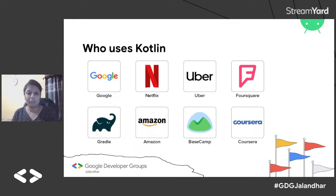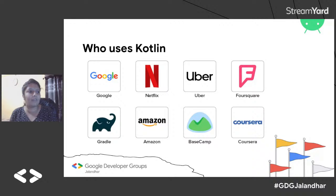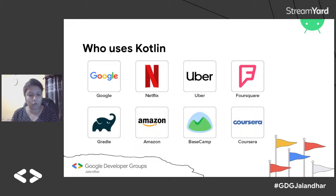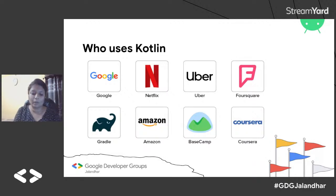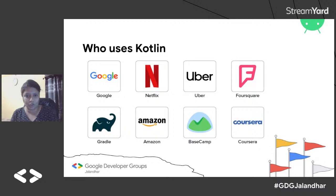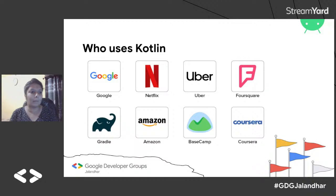Many popular applications use Kotlin — Google's apps like Maps, Gmail, and Play Store all use Kotlin, and so do Netflix and Uber. Many companies are migrating their projects to Kotlin for two reasons: first, it's the official language for Android development; and second, Google introduced Jetpack Compose as declarative UI for mobile apps, and Compose can only be written with Kotlin — you cannot use Java with Compose.